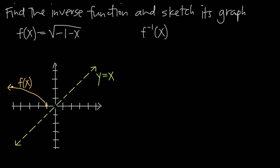We can find the inverse graphically by reflecting the original function over the line y equals x. For each point on the original graph, we draw a line perpendicular to y equals x through that point. For example, the point negative 1, 0 reflects to the point 0, negative 1. Similarly, the point negative 5, 2 becomes the point 2, negative 5.